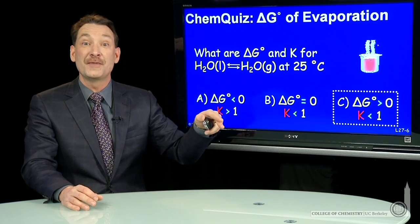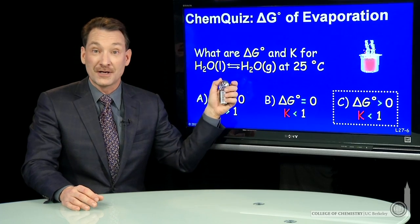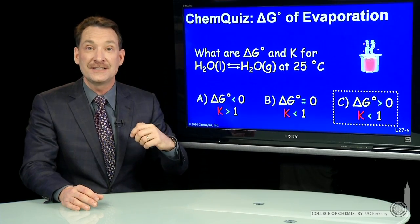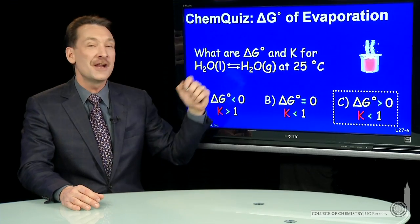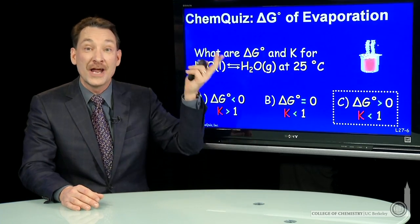So I could have started from that direction and said, the equilibrium constant for this reaction at 25 degrees C is less than 1. That means the standard state free energy difference must be greater than 0.